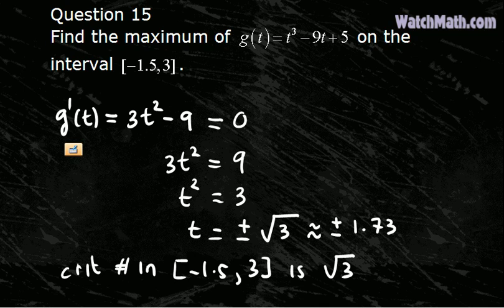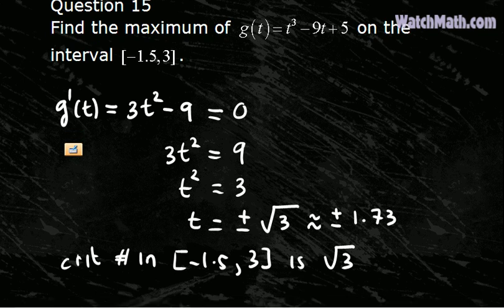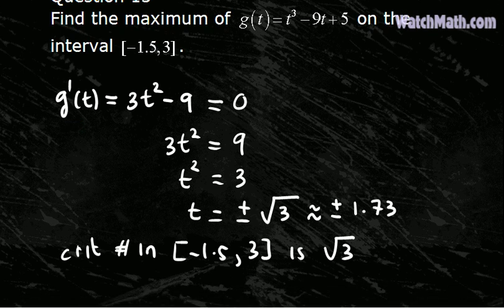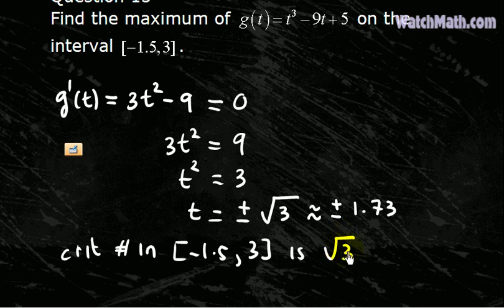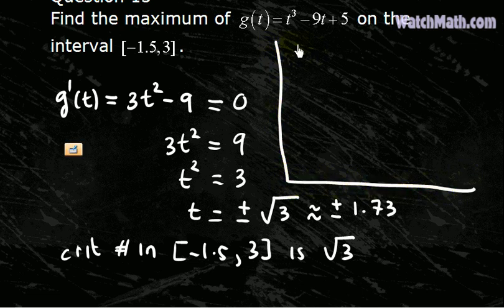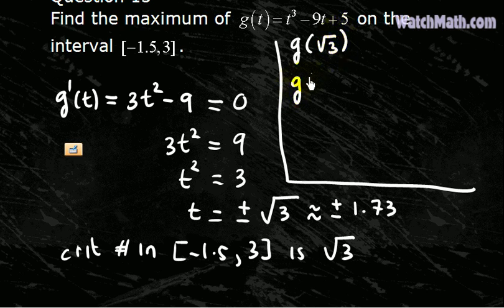So now our job is to compare the value of g at this critical number and at the endpoints. So let me squeeze it over here, we need to calculate g of square root of 3, g of negative 1.5, and g of 3.